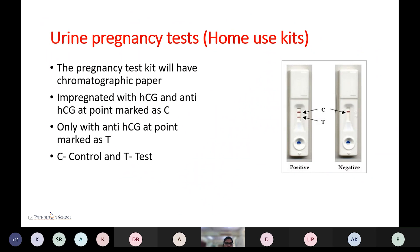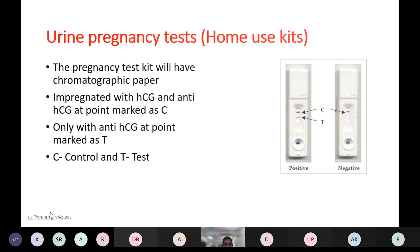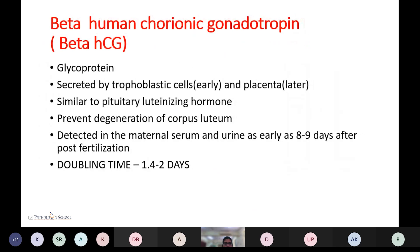The home-use pregnancy kit uses chromatography paper impregnated with hCG and anti-hCG. At the control point marker there is both hCG and anti-hCG, while at the test point there is only anti-hCG.